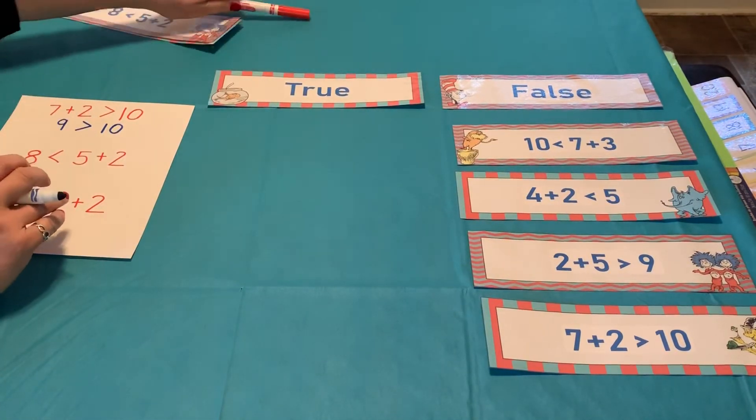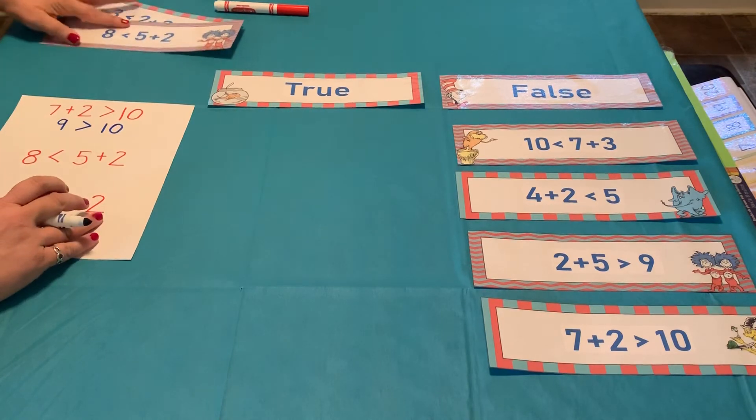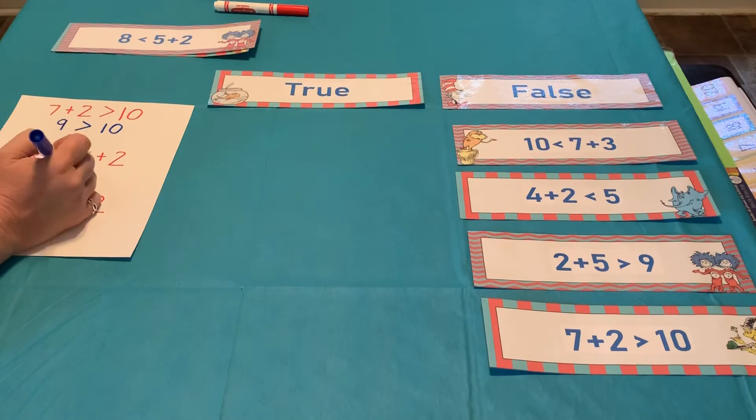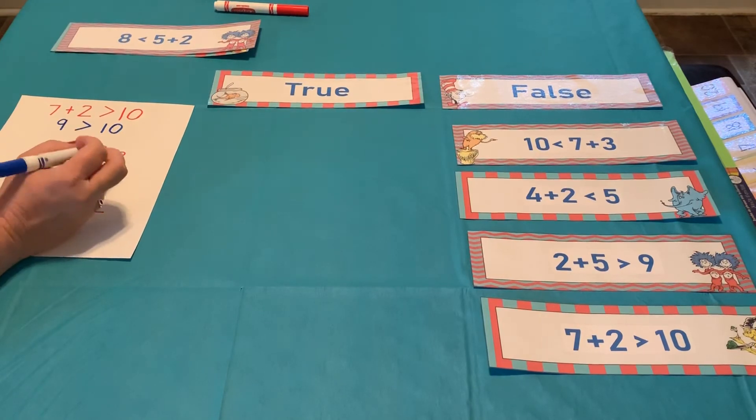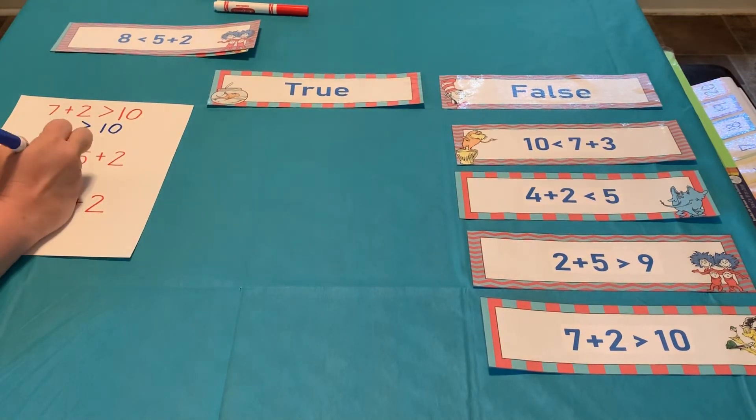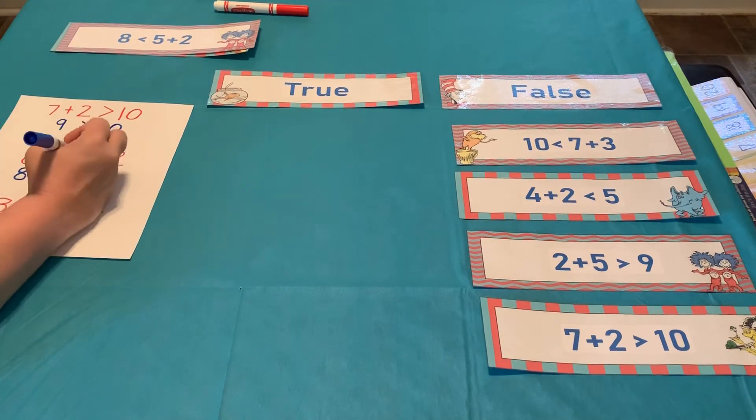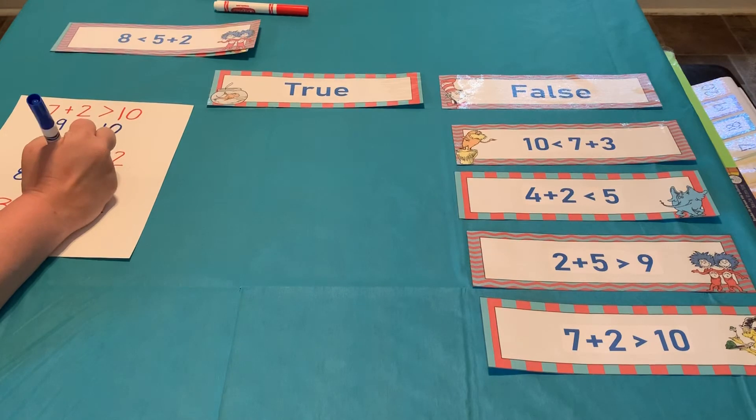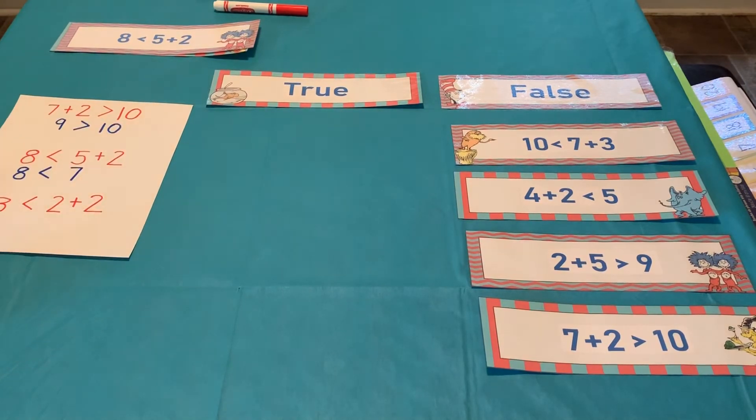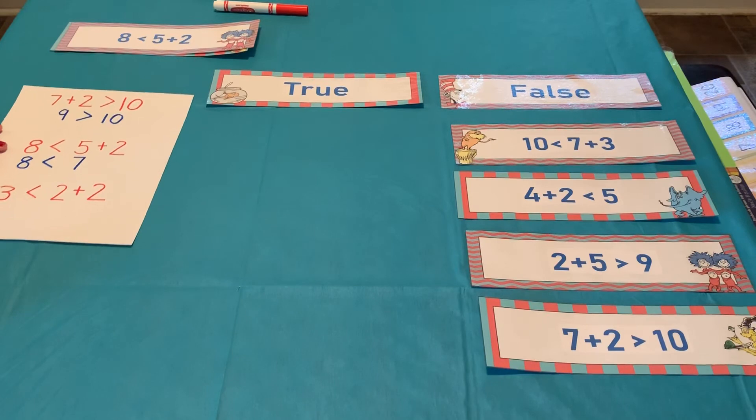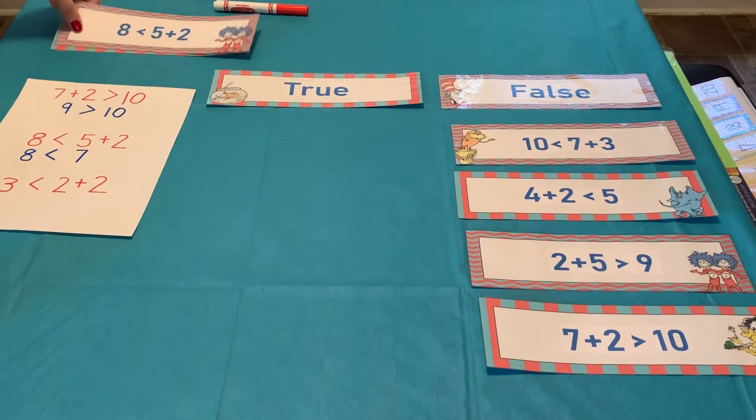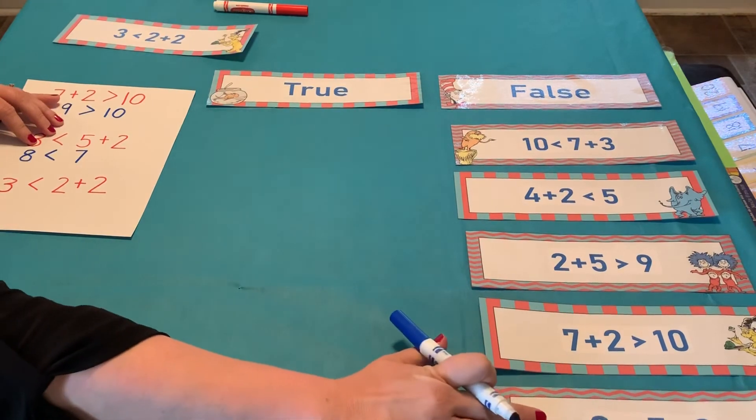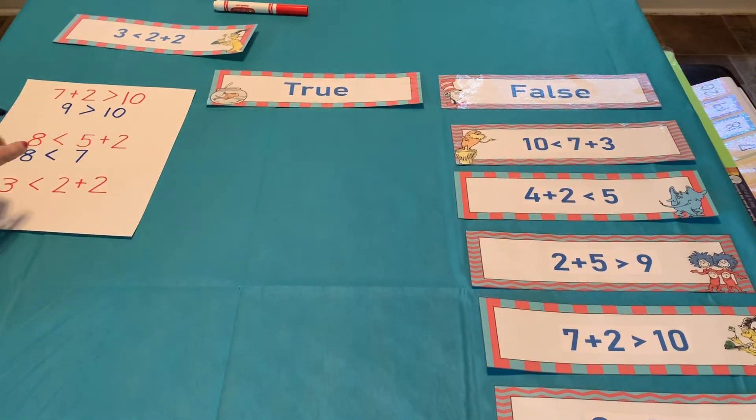Good job, guys. All right. Two more. 8. 8 is less than 5 plus 2. So, I bring down my 8. 8 is less than 5 plus 2. 5 plus 2 is 7. Is that alligator eating the biggest number? No, he is not. What kind of deal is this? So, we have to put that one under our false category once again.